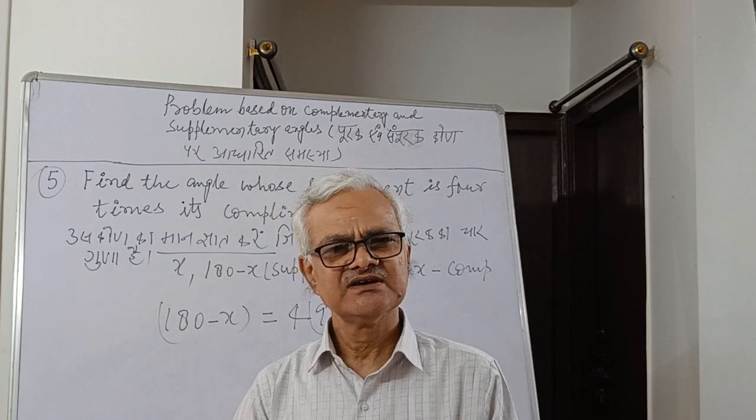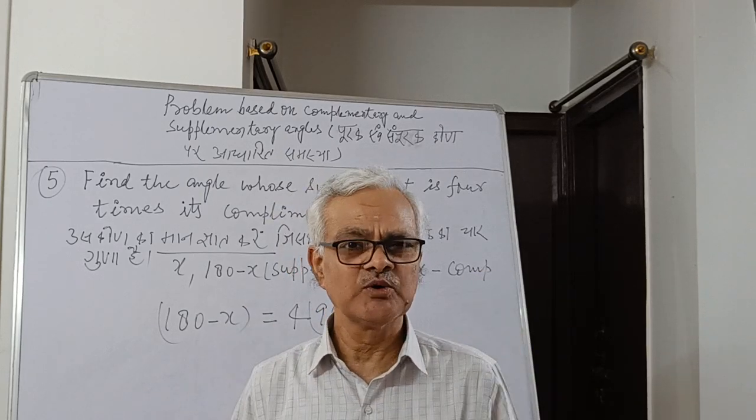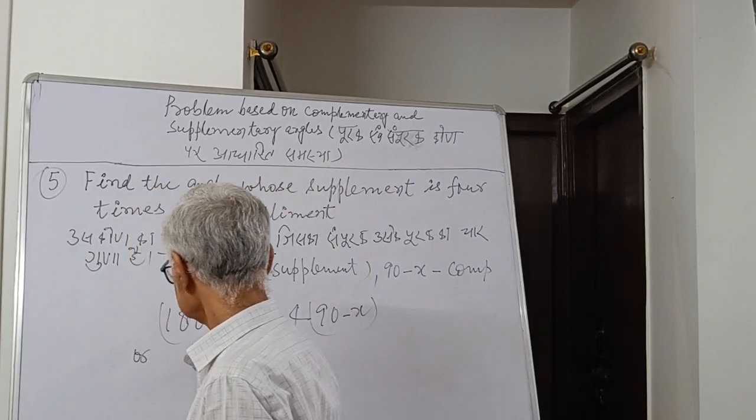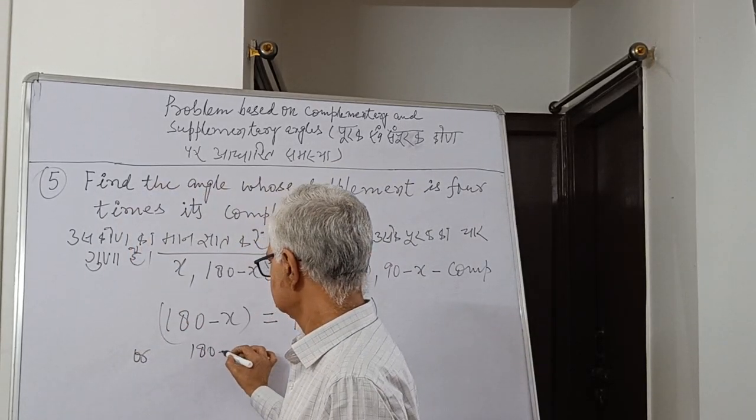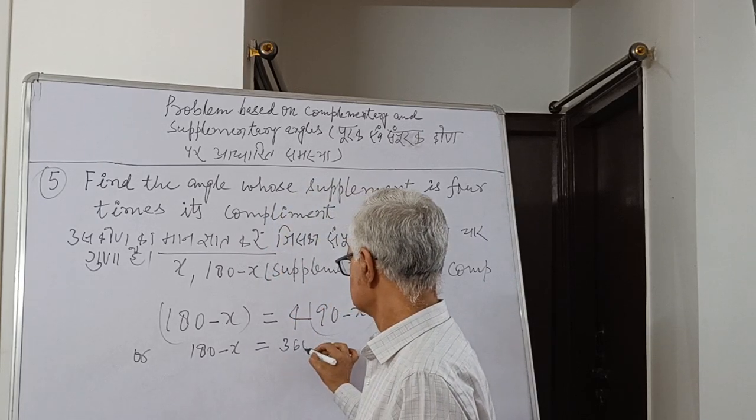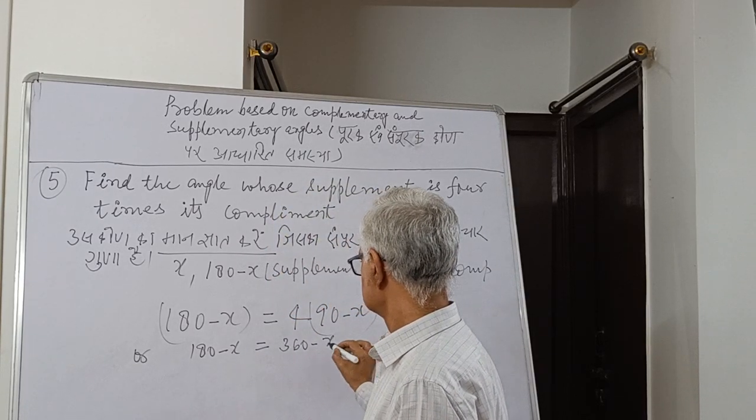Let us solve: 180 minus x is equal to 4 times 90 minus x, which equals 360 minus 4x.